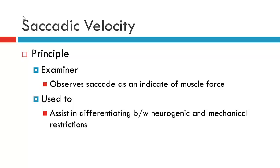We can also add further tests to further support one diagnosis over the other. So with saccadic velocities, what we will do is, as the examiner, you will observe the saccade as an indicator of muscle force and then make an interpretation from that as to whether it's likely to be mechanical or neurogenic in nature.